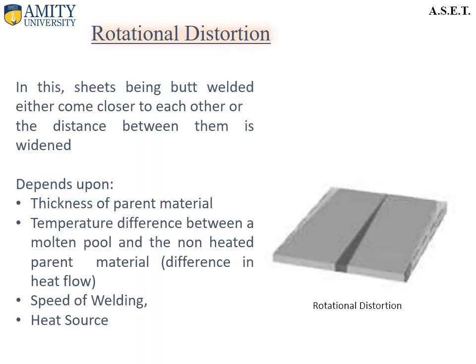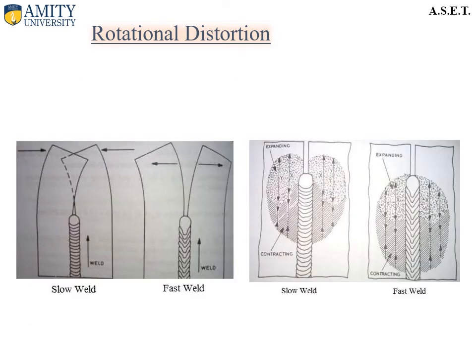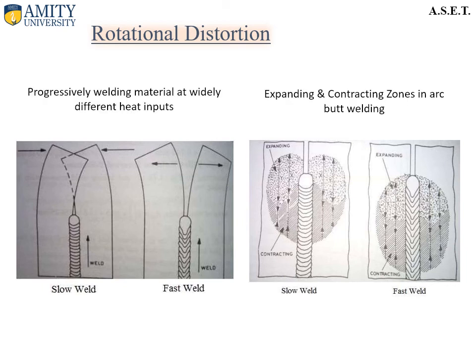Now let us discuss rotational distortion. In this type, sheets being butt welded either come closer to each other or the distance between them widens. Such distortion is known as rotational distortion, and it depends on the thickness of the parent material, the temperature difference between the molten pool and the non-heated parent material, the speed of welding, and the heat source. Examples shown include progressively welded material at widely different heat inputs, and expanding and contracting zones in arc butt welding.